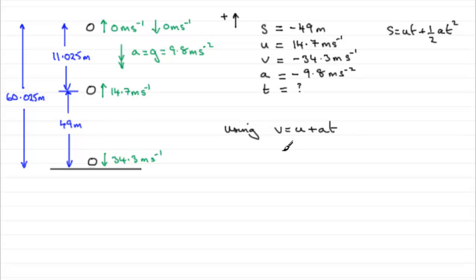Lovely equation to use, dead easy in this kind of question. So V we know is minus 34.3, so if we just put that in, minus 34.3 equals U, which is 14.7, and then we've got plus AT. Plus A, which is minus 9.8 multiplied by T.